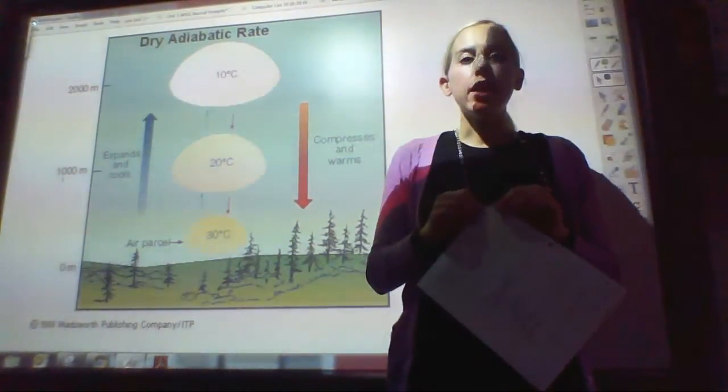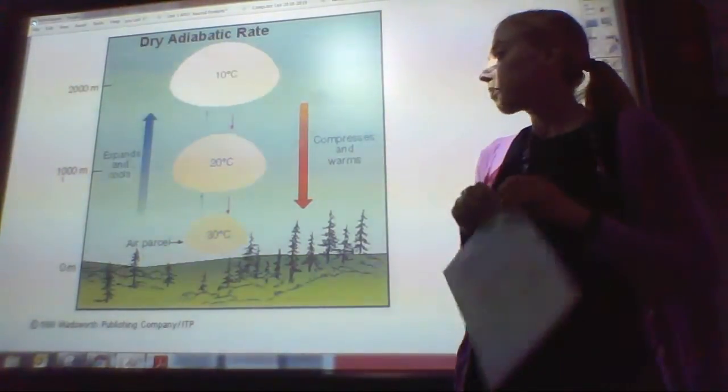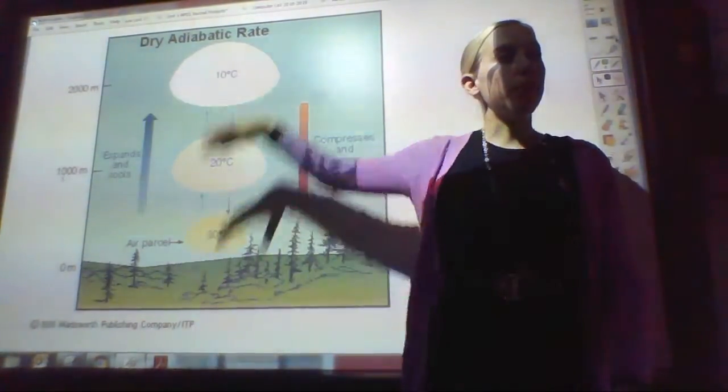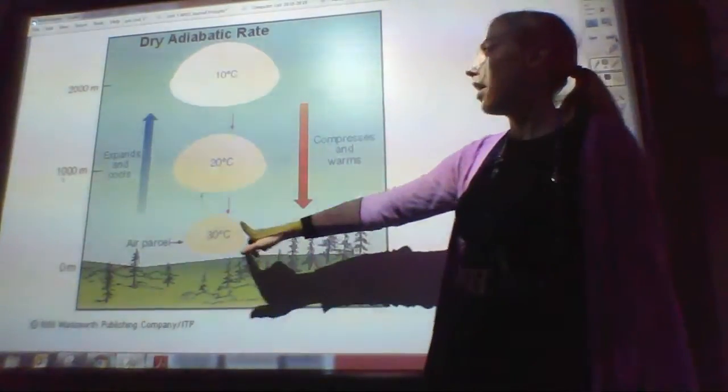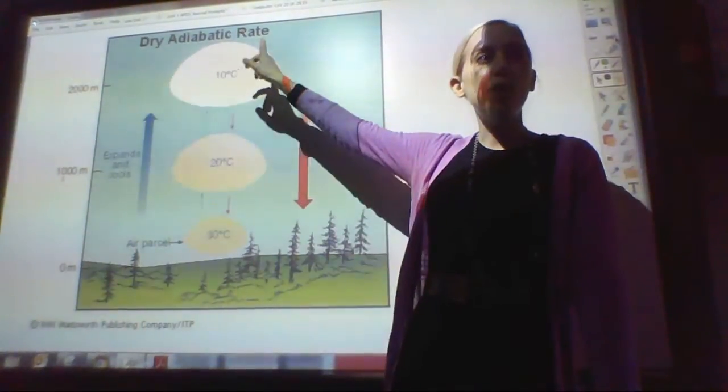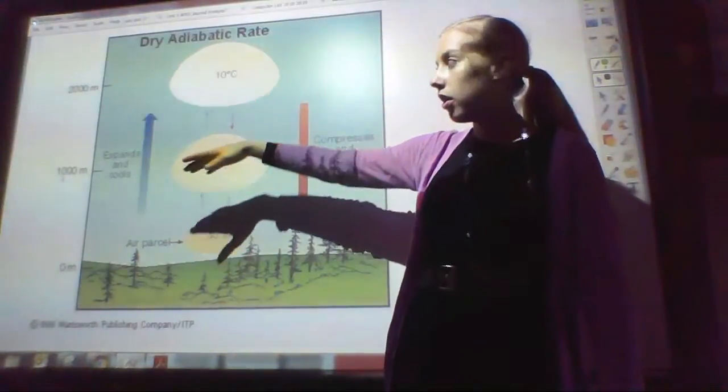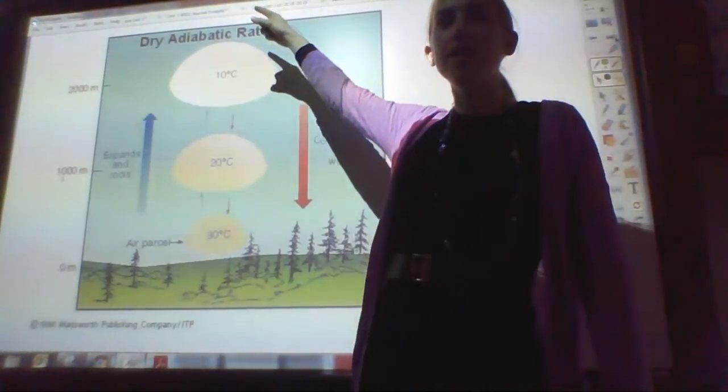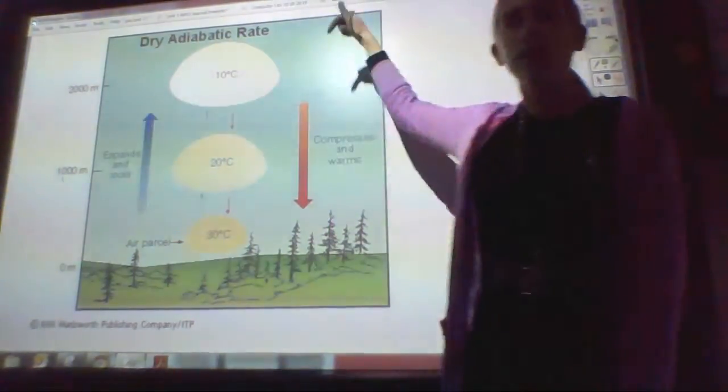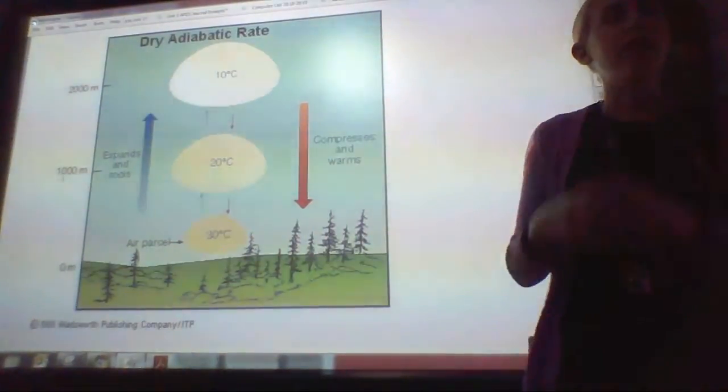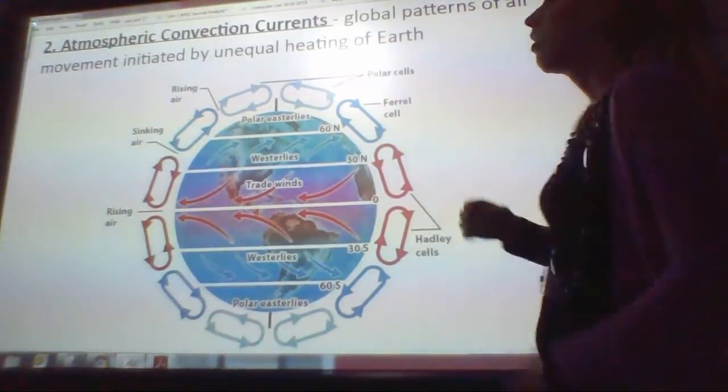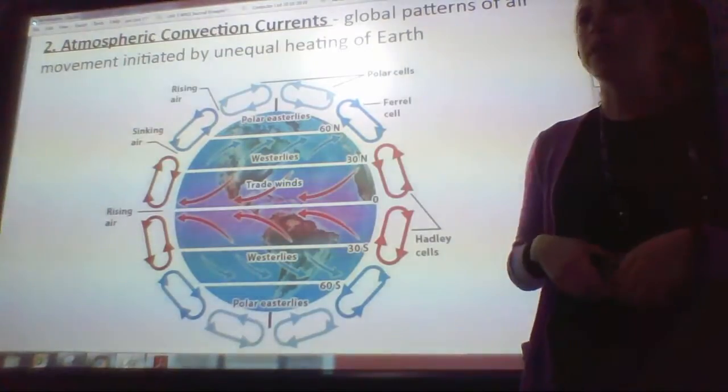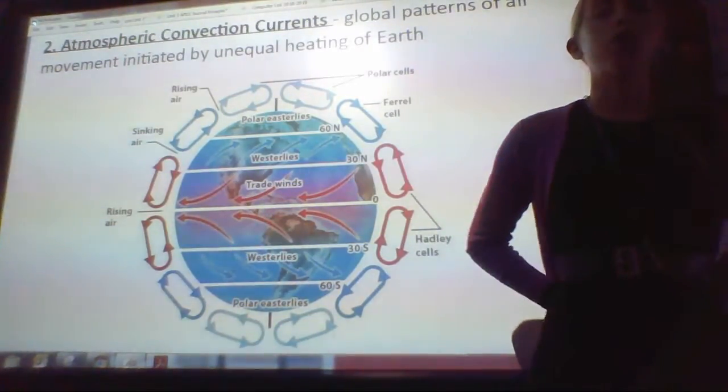So if we look at this diagram, this diagram illustrates it as well. We have our air, it's at 30 degrees, it's small. We have a lot of air pressure down here, right, because air pressure is the weight of the air. As we go higher up, we know that it cools. The air is a lot cooler. It is also expanding. So it's expanding and it's cooling. As it goes down, it is compressing and warming.